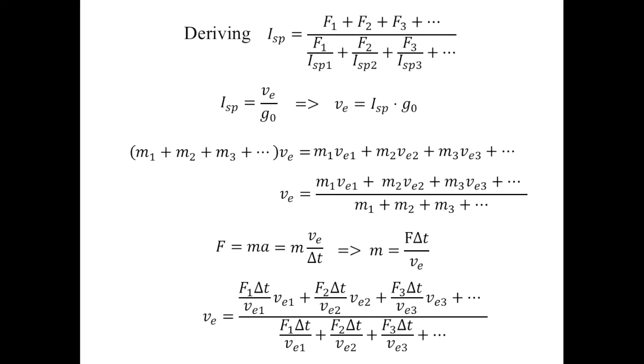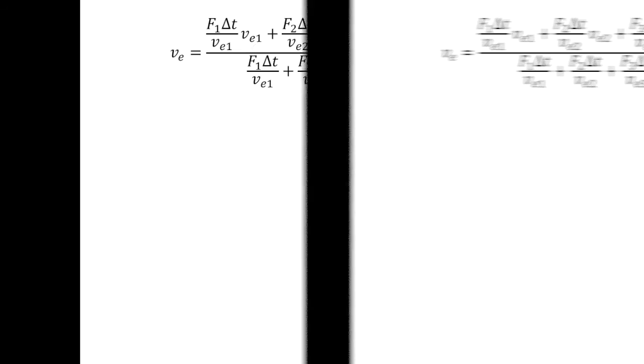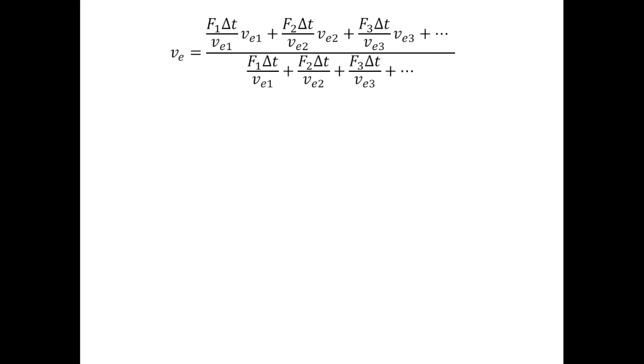Yuck. Pretty ugly. But it simplifies quickly. Let's take this to the next slide. In the numerator, notice that each VE in the denominator of each fraction divides out with its corresponding VE beside it. In addition, all those delta T's are common to each term and can be divided away as well. Now, this yields this formula.